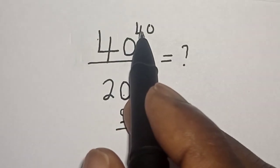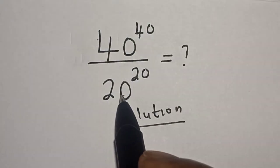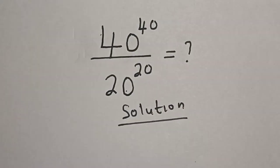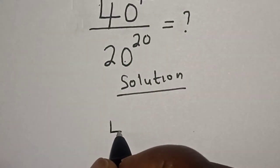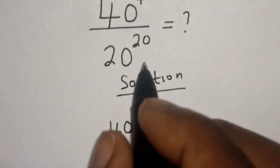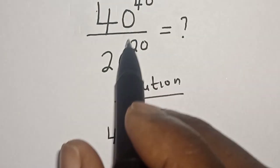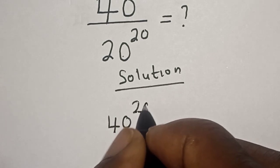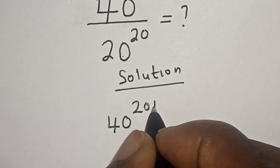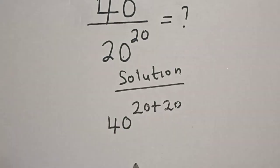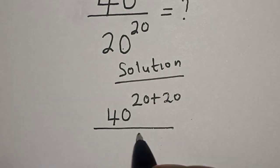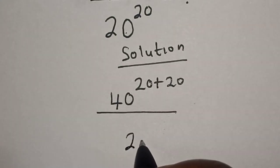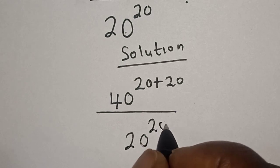40 raised to power 40 is at the numerator, and 20 raised to power 20 is at the denominator. Let's split this: 40 raised to power 40 can be written as 40 raised to power 20 plus 20, divided by 20 raised to power 20.